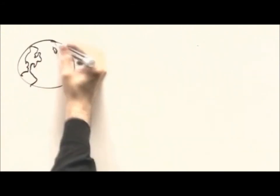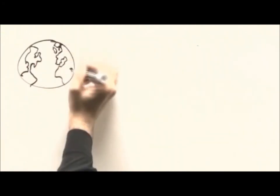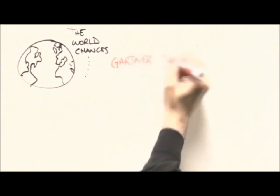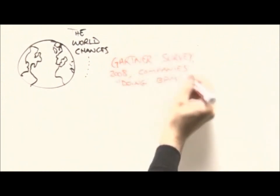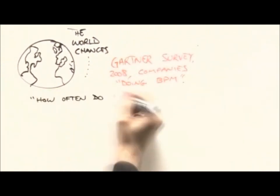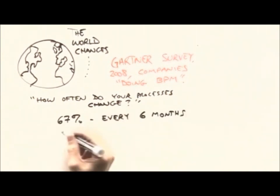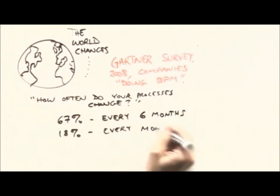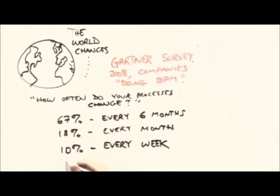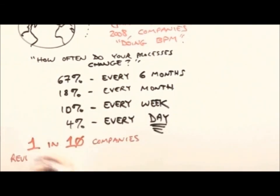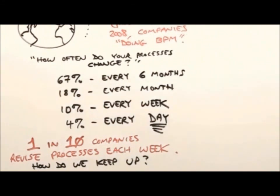Or you build to requirements — they are what you want, but not anymore. The world has a way of changing on a fairly regular basis. The Gartner Group did a recent study of companies that do business process management. They asked how often business processes change, and two-thirds change every six months, 18% monthly, 10% weekly, 4% daily. One out of ten companies change workflows weekly — how do you keep up?